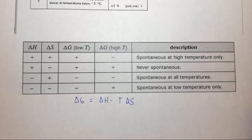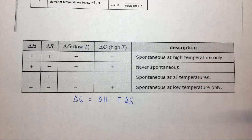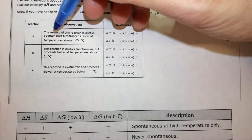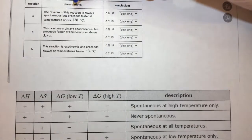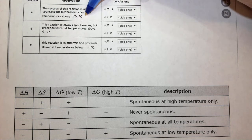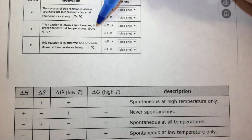The last thing I want to mention, because it's in the problem, is that the rate of the reaction is not part of this. Kinetics and thermodynamics are separate things. The rate of the reaction doesn't have anything to do with the delta G value, so we can ignore it when it's given in these problems. Let's look at this question. It says the reverse of this reaction is always spontaneous, but proceeds faster at temperatures above 126 degrees C. The 'proceeds faster' part — that's the kinetics — we can ignore it.